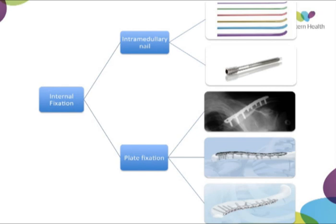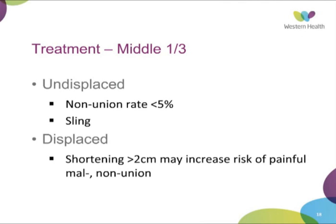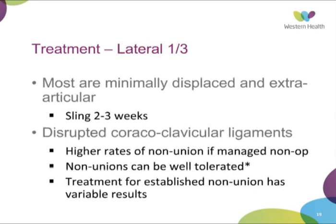The non-union rate of undisplaced middle-third clavicles is about 5%, and treatment is a sling for 2 to 3 weeks until pain resolves, after which patients should be encouraged to mobilise the shoulder. Shortening of more than 2 centimetres is the main risk factor for painful malunion and non-union. For lateral third fractures, most are minimally displaced and extra-articular, and similar non-operative management is pursued. However, where there's disruption of the coracoclavicular ligament, higher rates of non-union are observed with non-operative management, although athletes may tolerate these non-unions well.